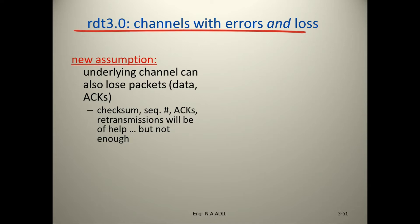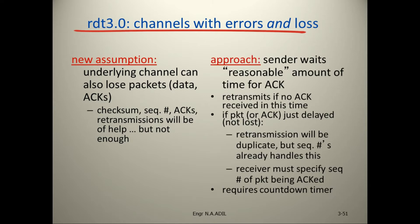Checksum, sequence numbers, and acknowledgements will be of help but not enough. The approach is that the sender waits a reasonable amount of time for an acknowledgement, and retransmits if no acknowledgement is received in this time. If the packet or acknowledgement is not lost, retransmission will be a duplicate, but sequence numbers already handle this. The receiver must specify the sequence number of the packet being acknowledged, and this requires a countdown timer.